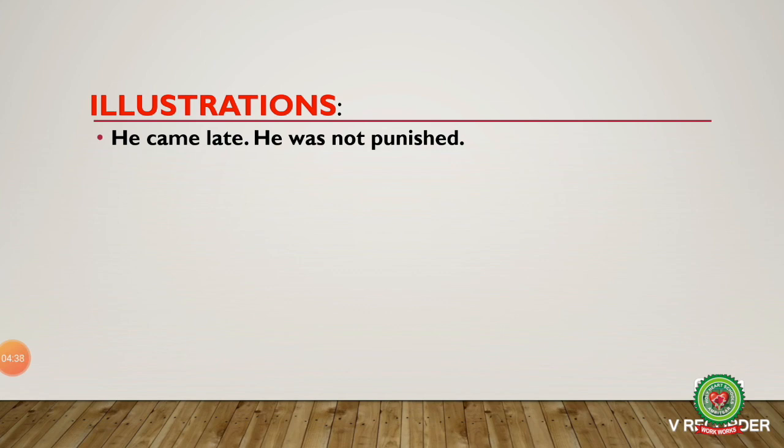Let us take an example: 'He came late, he was not punished' — that is, 'He came late but he was not punished.' Instead of 'but,' we can use 'in spite of' or 'despite.' 'Came' will change into 'coming.' Since the subjects are the same, 'he' will be used only once.